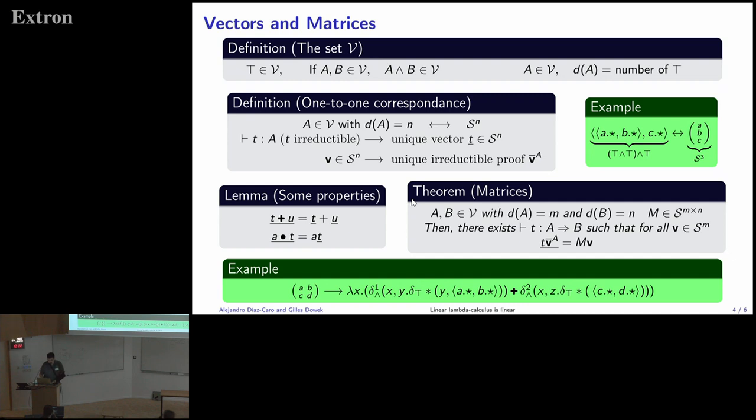And we have this theorem also that says that if we have two types in V, with the dimension of A being M and the dimension of B being N, and then you take a matrix of M times N, then there exists a unique term, irreducible term, from A to B, such that for all vectors in S M, when you apply this to the translation of this vector, what you get is what you will obtain from applying the matrix to the vector. So the correspondence is up to there. This is just an example that I will not explain because it's quite messy, but for example, this matrix, you can encode it in this way. Here you have the A, B, and the C, D.